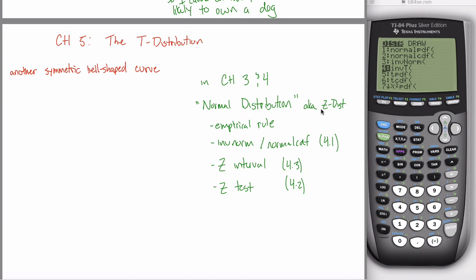The normal distribution is also called the z-distribution — I don't think I've told you that yet. Another name for the normal distribution is the z-distribution. This is one very specific symmetric bell-shaped curve. I just said we have the symmetric bell-shaped curve — it's really important, a lot of things in nature have this shape, and the central limit theorem turns things that don't have this shape into things that do. But we haven't talked about whether there are other symmetric bell-shaped curves. Turns out there are.